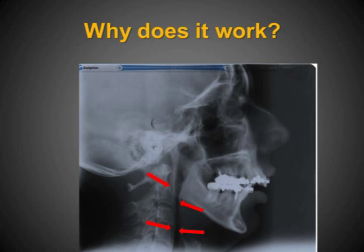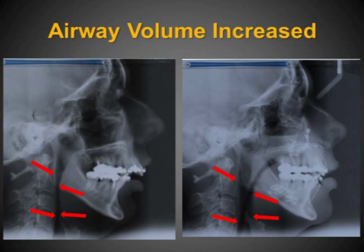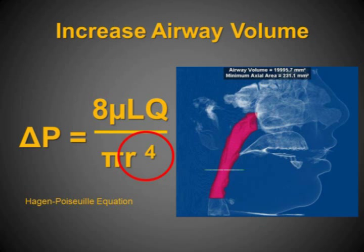You can see in this x-ray how the airway is actually the size of a straw. When the patient lays down, the tongue drops back and easily occludes the airway. By advancing the midface and the lower jaw, the airway can be greatly increased. In this case, the airway was more than tripled in size, relieving the patient of her obstructive sleep apnea. The reason this works is due to the physiologic equation called Poiseuille's Law, where the radius is inversely proportional to the fourth power, related to the pressure flows, which relate directly to the volume flows.